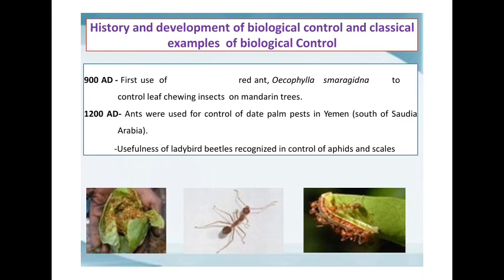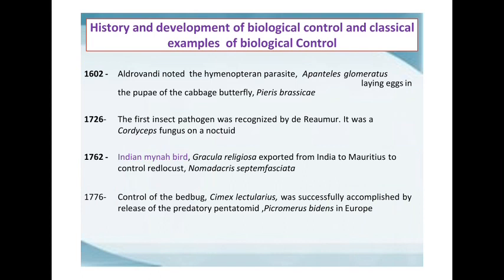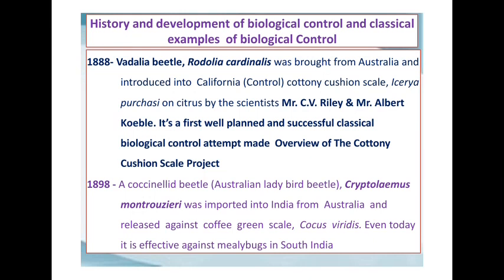These are some of the historical events or milestones in biological control. The first use of rare ants to control leaf-eating insects on mandarin trees is part of the ancient history. In 1762, the Indian myna bird was exported from India to Mauritius to control the red locust. Most importantly, in 1888, the Vedalia beetle, Rodolia cardinalis, was brought from Australia and introduced into California for the control of the cottony cushion scale on citrus, by scientists C.V. Riley and Albert Koebele — a well-planned and successful classical biological control attempt.